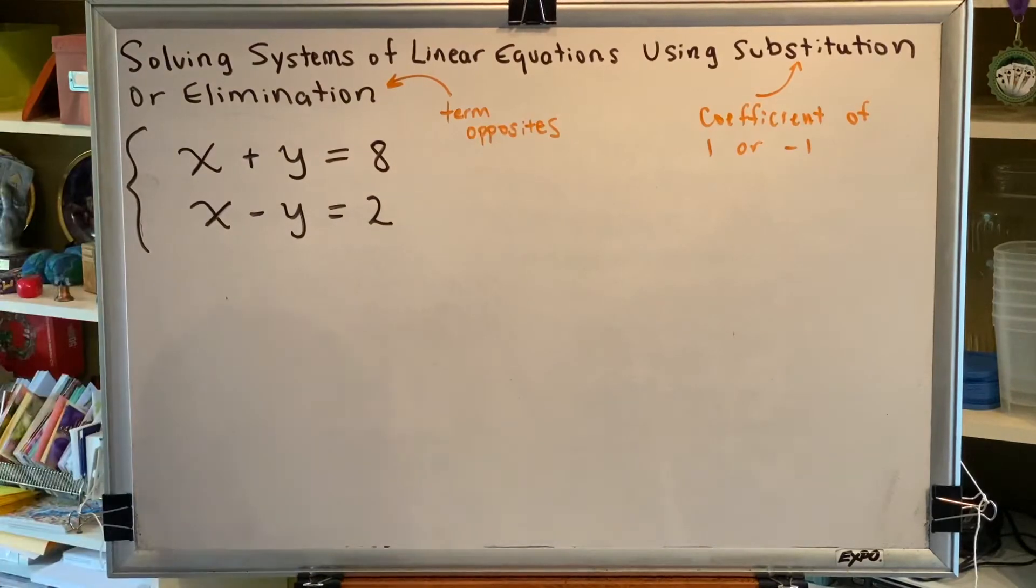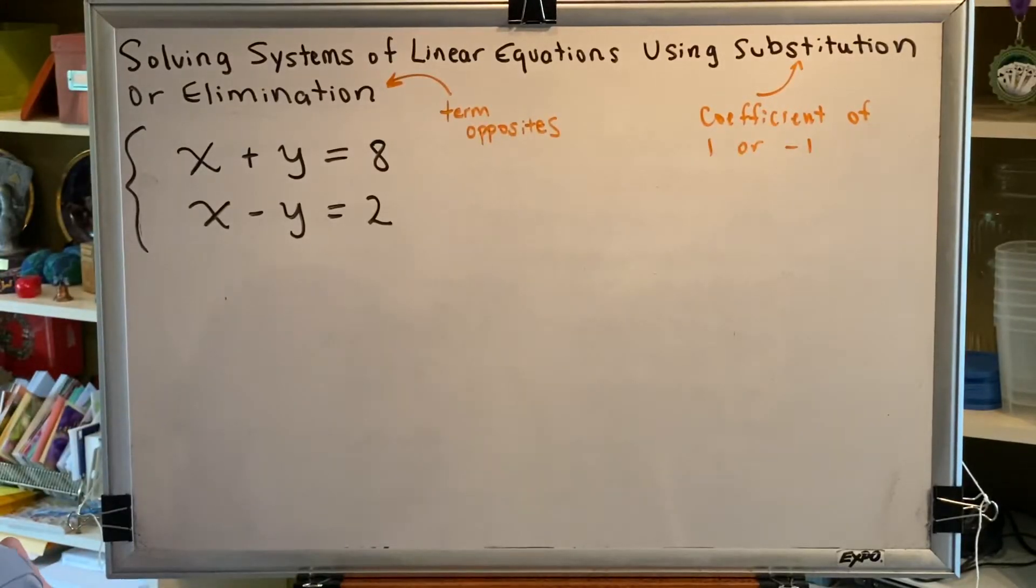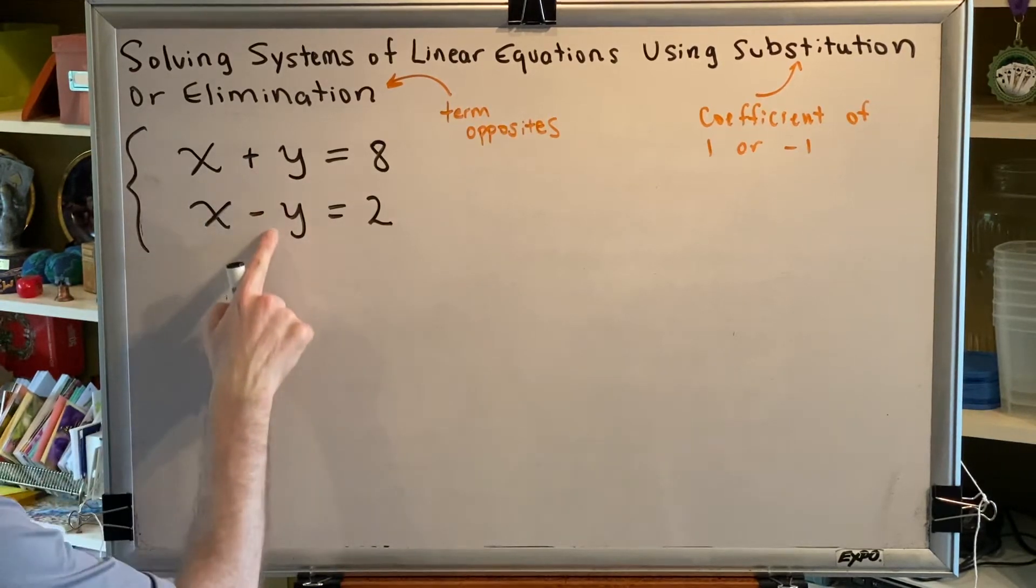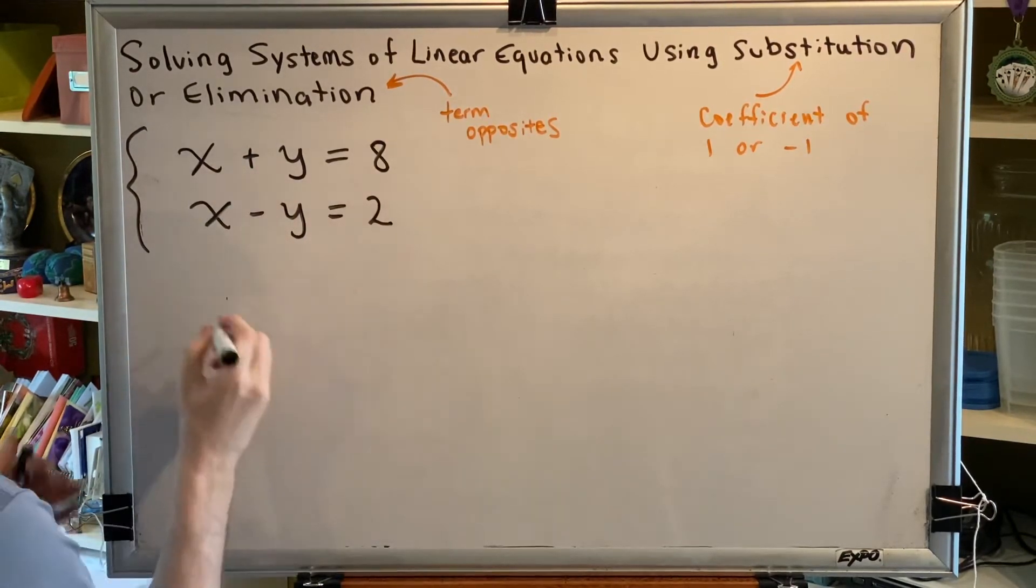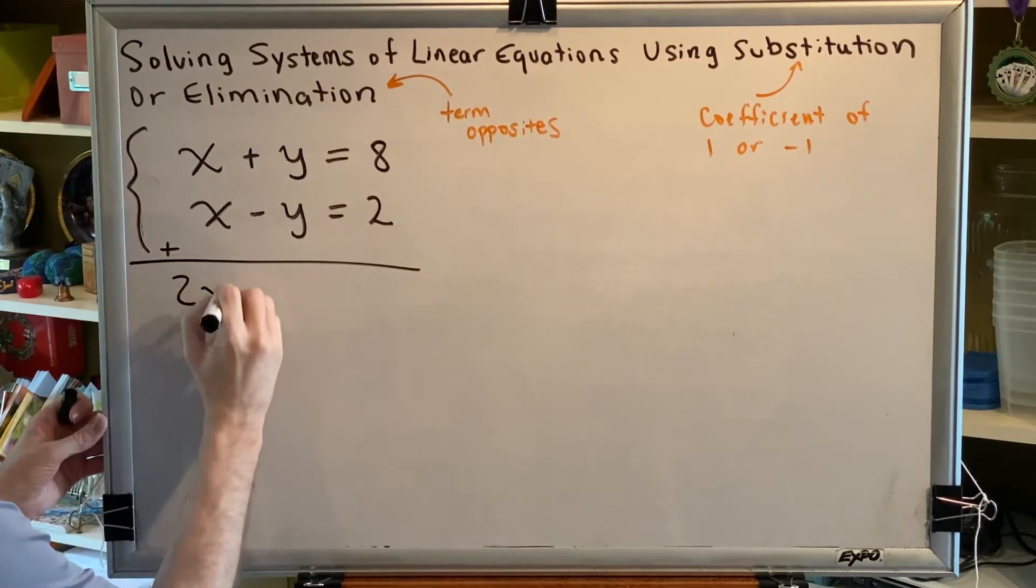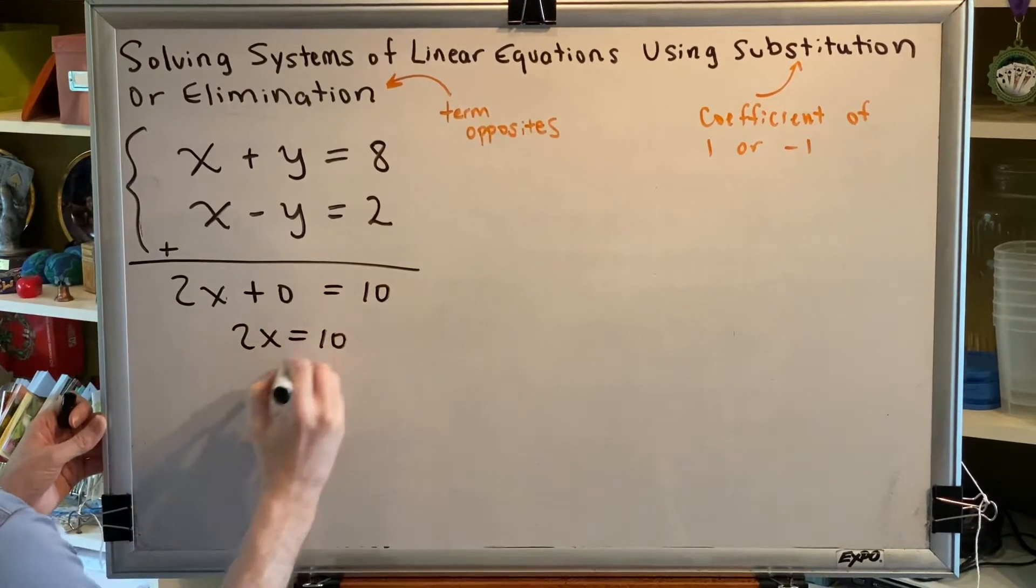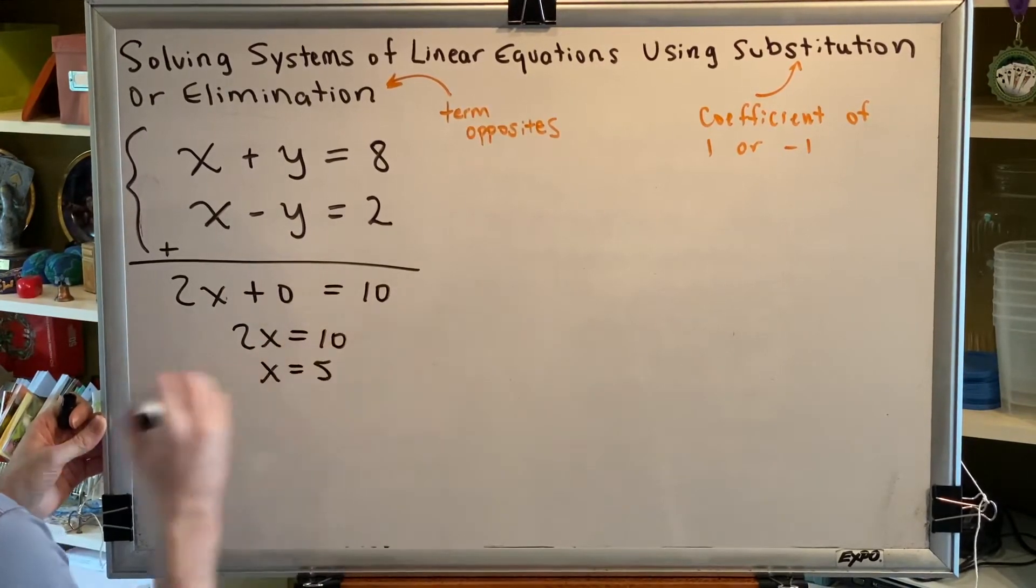Let's use both methods to solve this problem. First, elimination. We can see that we already have opposites for our y terms. So if we simply add our two equations together, we'll get 2x plus 0 equals 10, 2x equals 10, x equals 5.